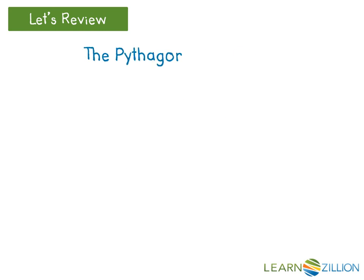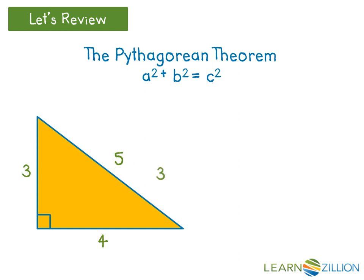The Pythagorean Theorem, which is a squared plus b squared equals c squared, is a formula that shows the relationship between the legs and hypotenuse of a right triangle.